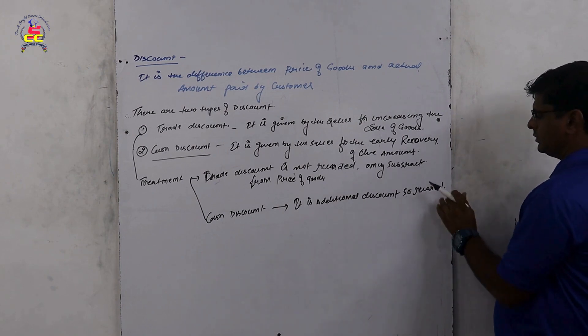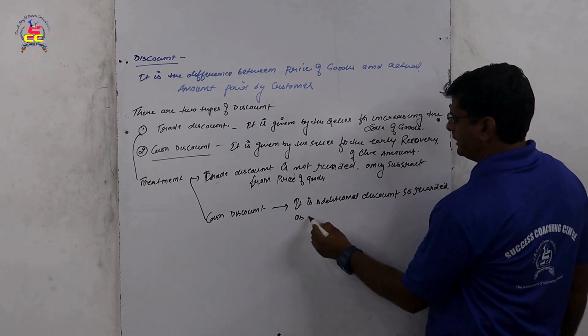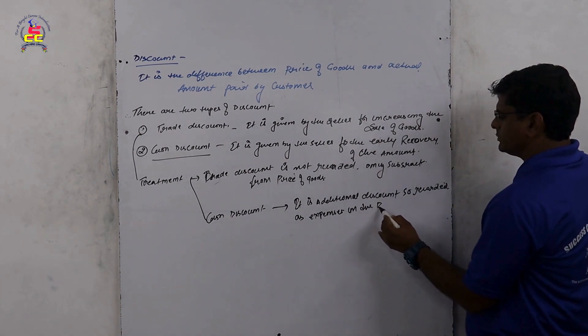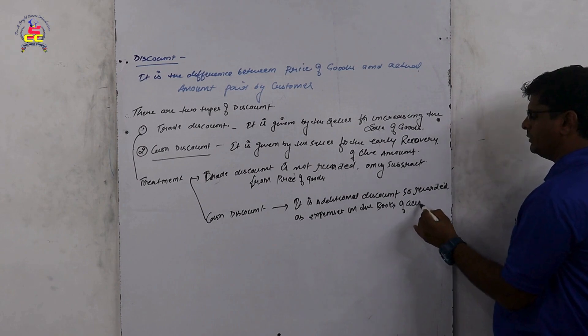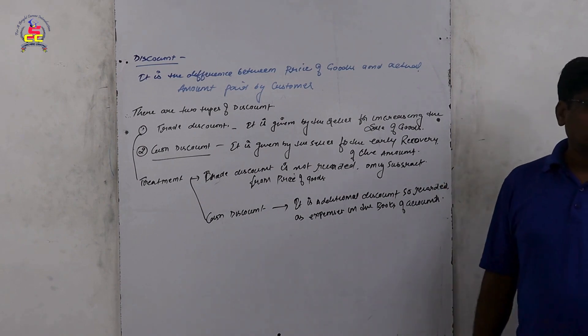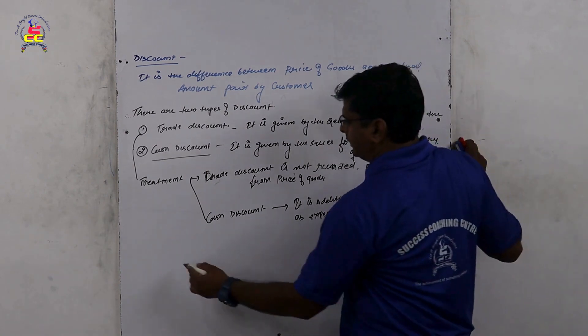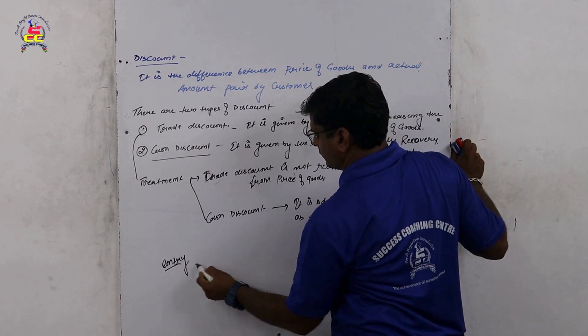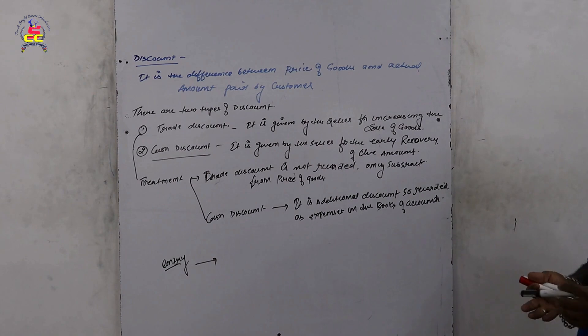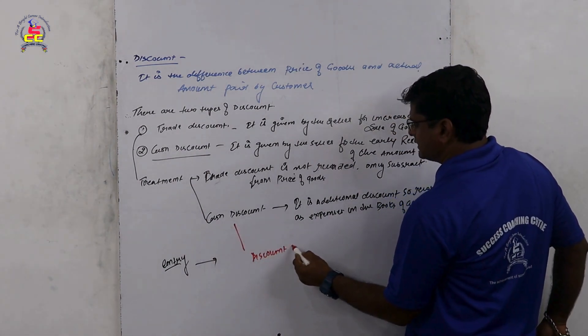So recording is expense in the book. How do we write the discount? The cash discount is also recorded. The discount is allowed.